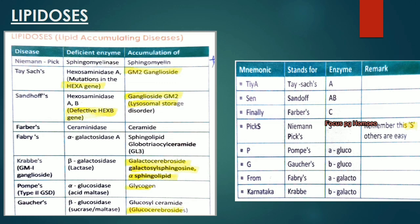Lipid accumulating diseases (lipidoses): Niemann-Pick disease has a deficient enzyme sphingomyelinase with accumulation of sphingomyelin. Tay-Sachs disease has deficient hexosaminidase A with accumulation of GM2 gangliosides. Sandhoff disease has both hexosaminidase A and B affected, with GM2 ganglioside accumulation — also a lysosomal storage disorder.